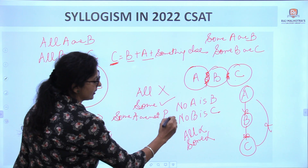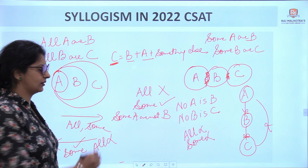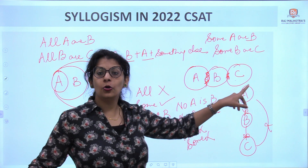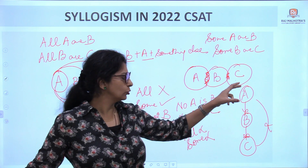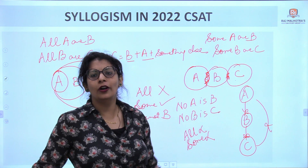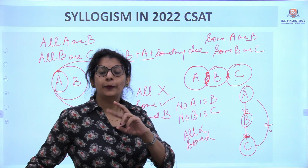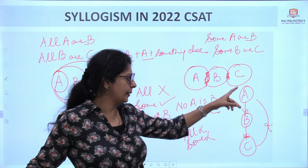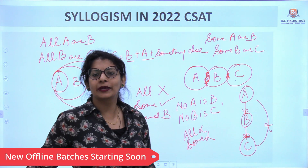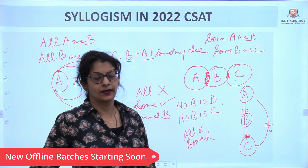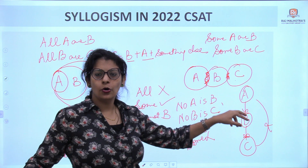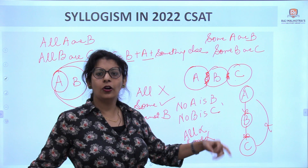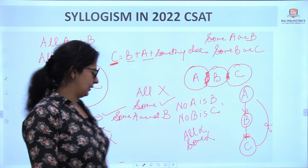Some A are not B — this is true. How? When no A is B, it means full A is not B. So some A is also not B. Just like when all students are absent, half the students are also absent. When the whole has a cross, the half also has a cross. So: No A is B → Some A is not B is also true. Similarly, Some B is not C is also true.